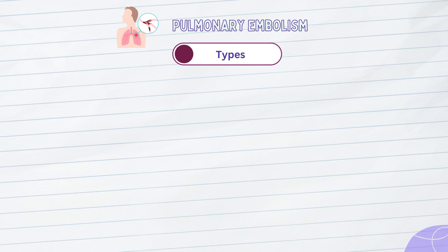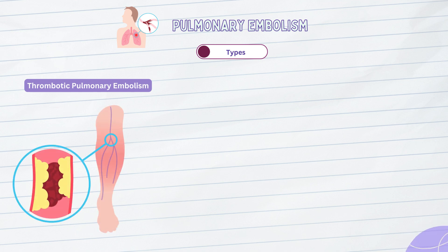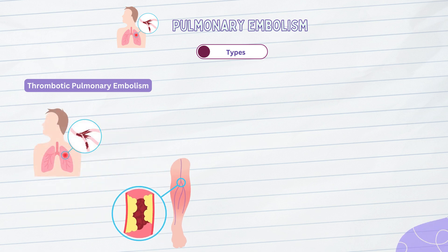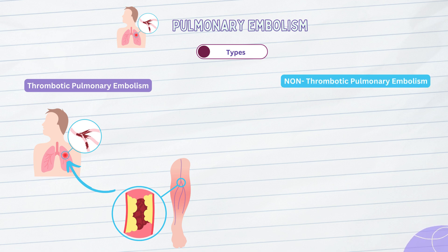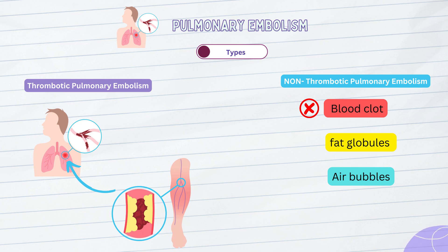Pulmonary embolism can be classified into different types based on the source of the blood clot and its characteristics. The first type is thrombotic pulmonary embolism, which occurs when a blood clot, known as a thrombus, forms within the deep veins of the legs — deep vein thrombosis, or DVT — and then dislodges, traveling through the bloodstream to the lungs. The second type is non-thrombotic pulmonary embolism, where the embolus consists of substances other than blood clots. These substances can include fat globules from fractures or bone marrow injury, air bubbles from trauma or medical procedures, amniotic fluid during childbirth, or even foreign material like tumor fragments or clumps of bacteria.